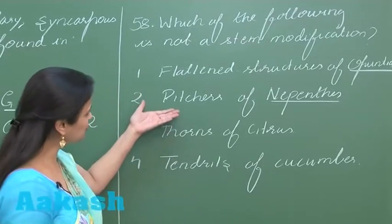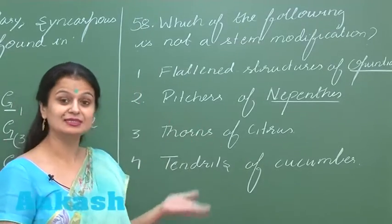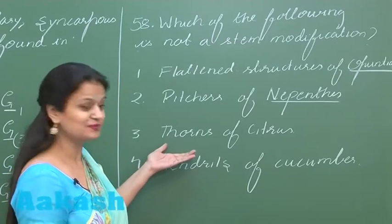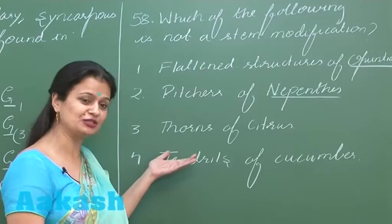Then pitcher of Nepenthes, that is the modification of the leaf lamina. Thorns of Citrus, again modification of the bud.